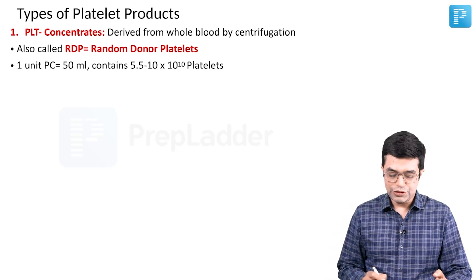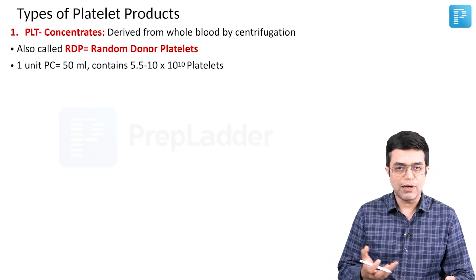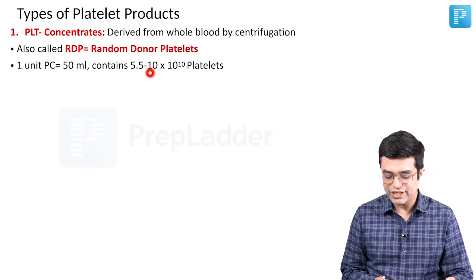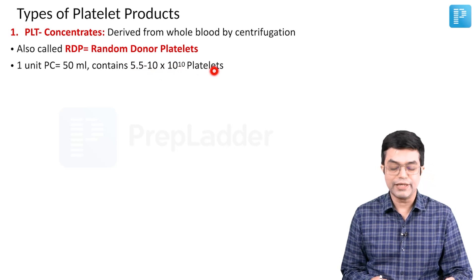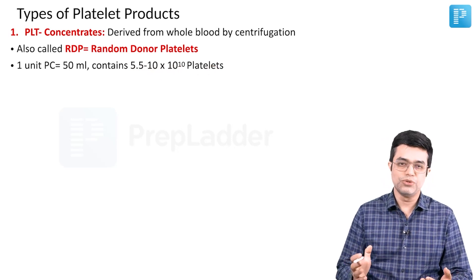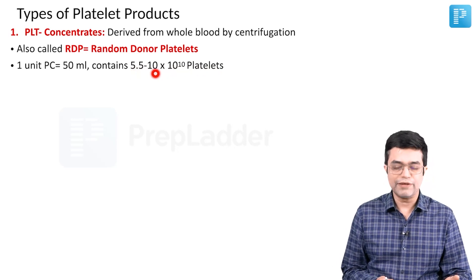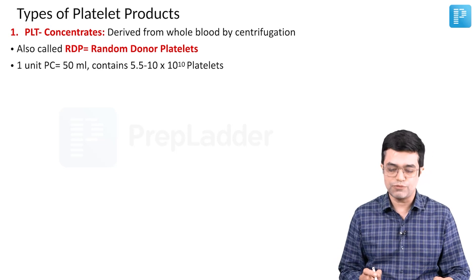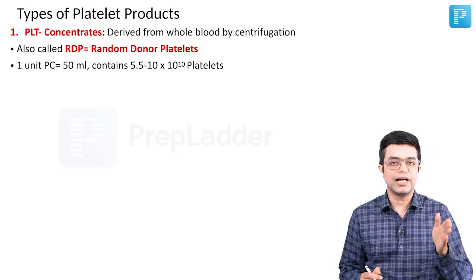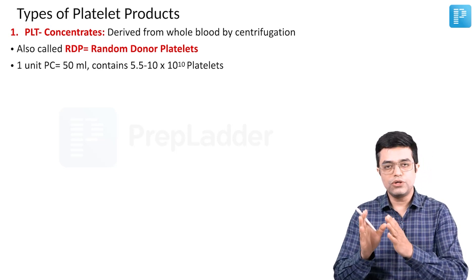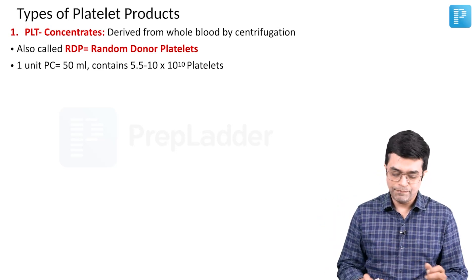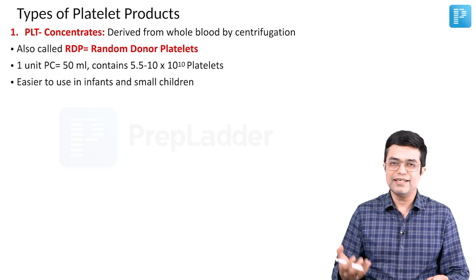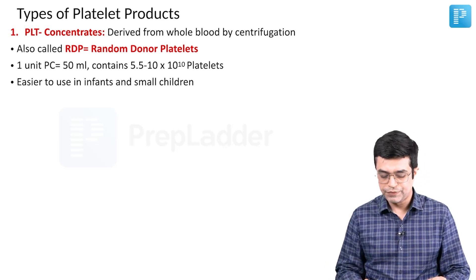Please do not get confused in the exam. One unit of platelet concentrate is about 50 ml and it contains between 5.5 to 10 into 10 raised to the power 10 platelets. Nelson gives a range of 5.5 to 10, while Indian textbooks and most other hematology textbooks give a range of 5 to 6.5 into 10 raised to the power 10 platelets. It is easier to use in infants and small children, and it is cheaper and easily available.